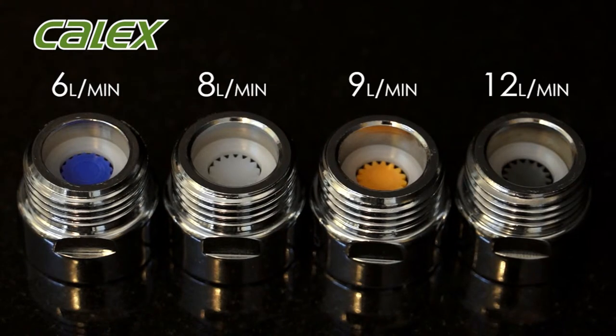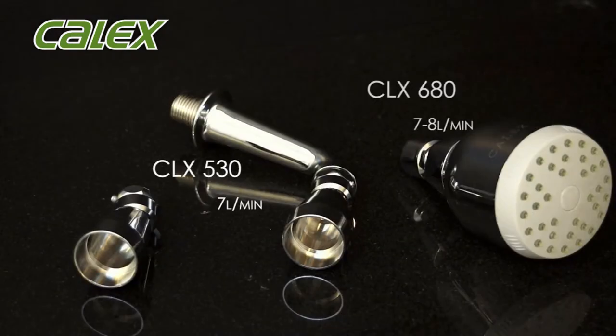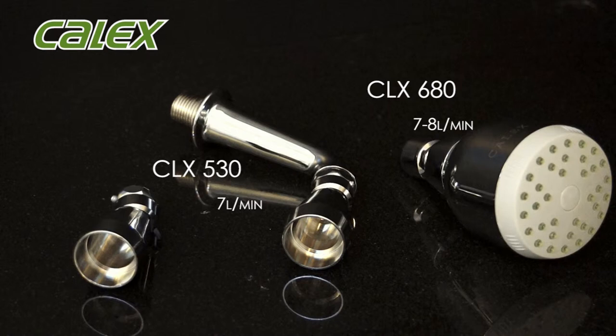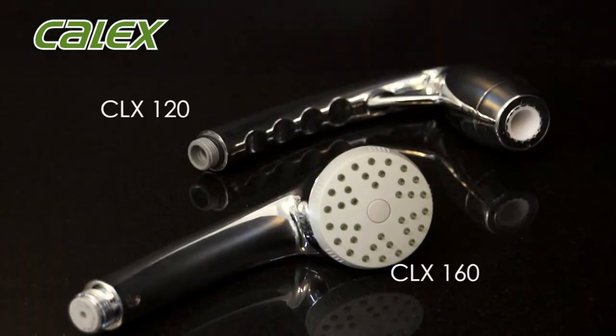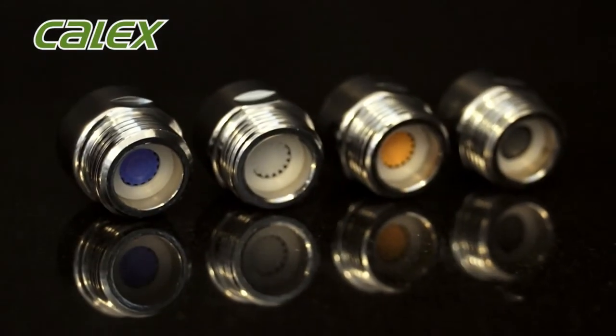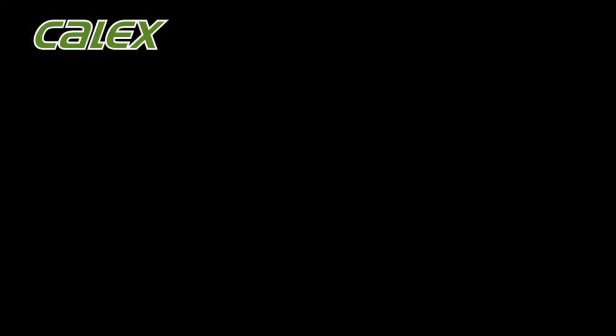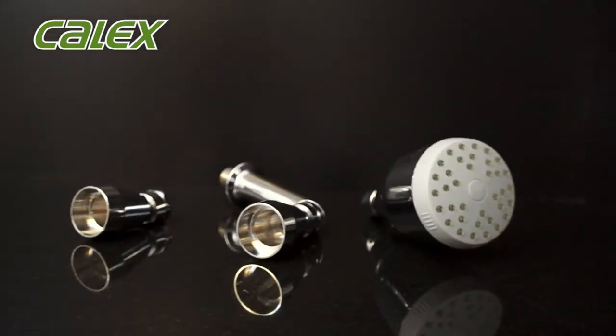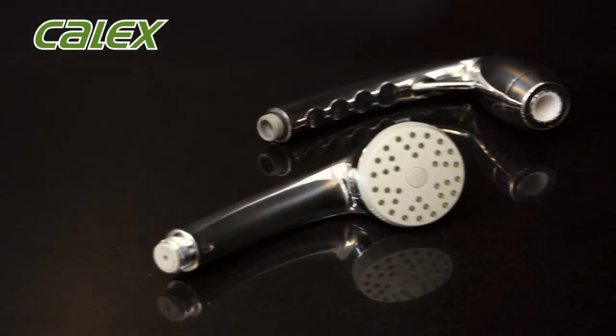The Calex water flow reducers for sink and shower appliances are made to German quality. They are easy to install. It takes approximately two minutes per piece. Preventive maintenance consists of cleaning them once every four months and replacement depends on the chalk content of your region's water.